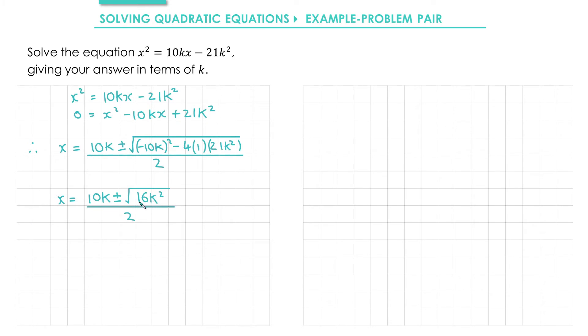Well, that's nice and convenient because we can square root that. The square root of 16 is 4, and the square root of k squared is k. So we get x equals 10k plus or minus 4k, all divided by 2. This gives us two solutions. The first one where we use the plus, we get 10k plus 4k is 14k, divide it by 2, we get 7k. Or if we use the minus, we get 10k minus 4k is 6k divided by 2, gives us 3k.